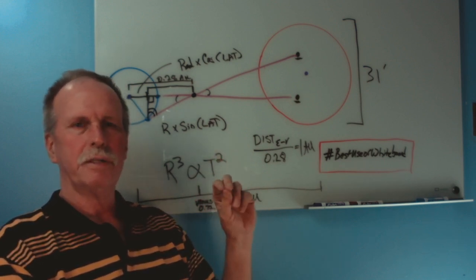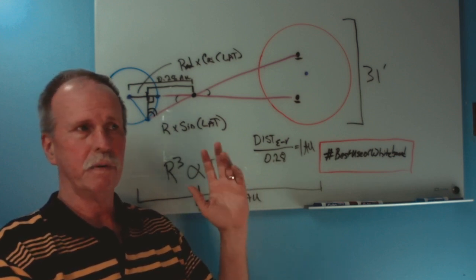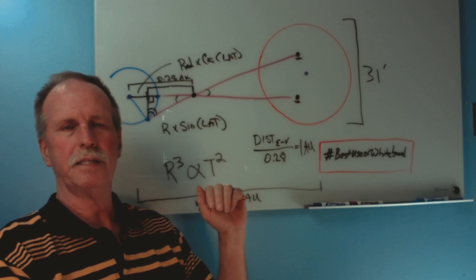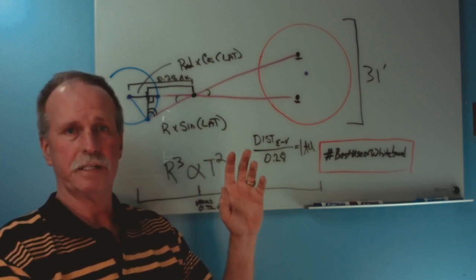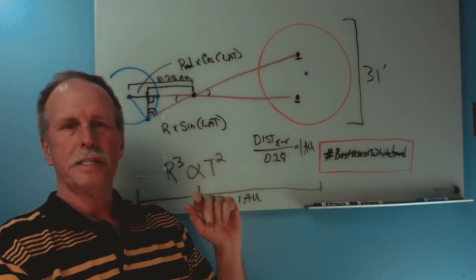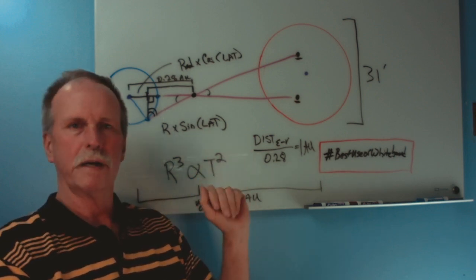Well, they went back to the original paper done by Edmund Haley of Comet fame. And he wrote this paper in the early 18th century, knowing that he would never live long enough to see a transit of Venus. So let's go ahead and see his method for doing it and how you could do it without being able to coordinate times.